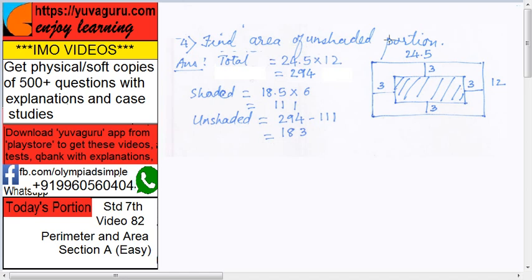Find the area of the unshaded portion. See, this unshaded means blank. So total, what is given? The length is given 24.5, breadth is given 12, and these distances are given 3, 3, 3.